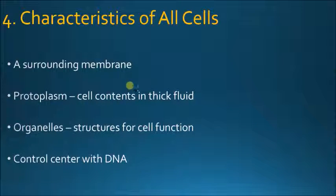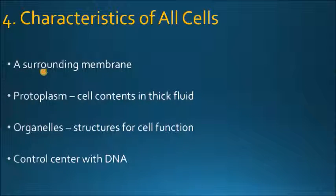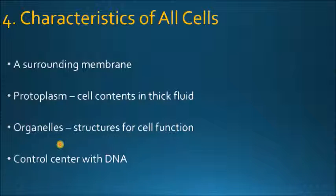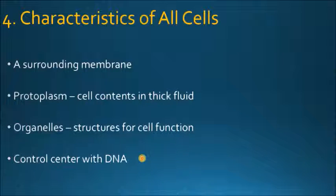Characteristics of all cells — this is something you really need to pay attention to. They have a surrounding membrane, so they are protected from exterior threats. They have something called protoplasm, which is the cell contents in a thick fluid. Organelles are basically organs — the structures inside a cell that carry out a number of different functions. And the control center with the DNA, which we call the nucleus.